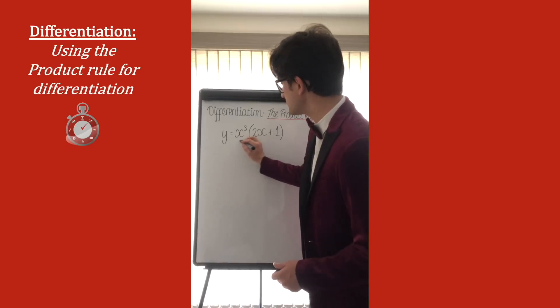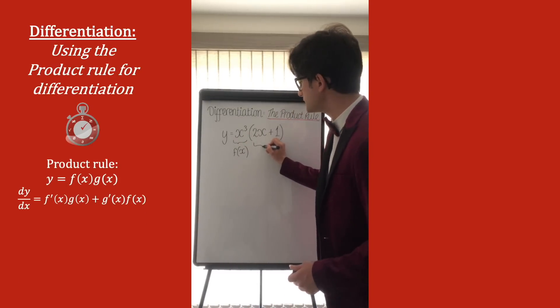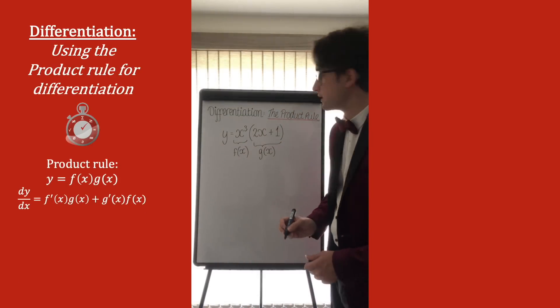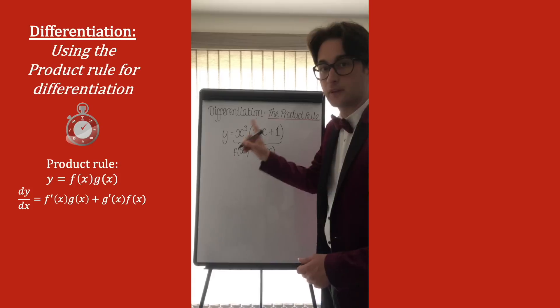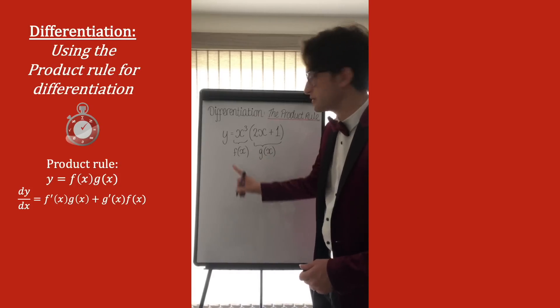If we look at the example now, we can see this as the first function of x, and this as the other function of x. And so to differentiate this, we differentiate this one and times it by this, then add the other way round, this one differentiated, times this.